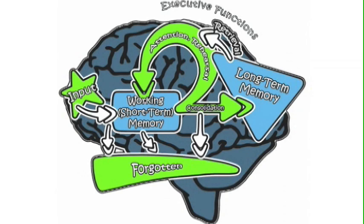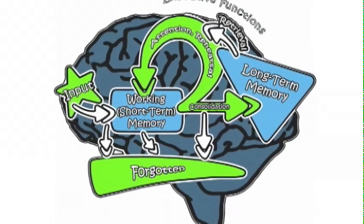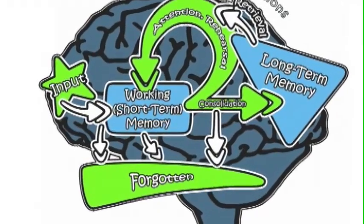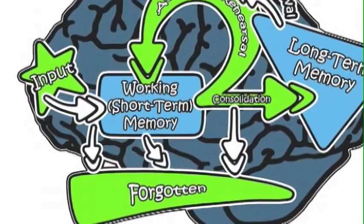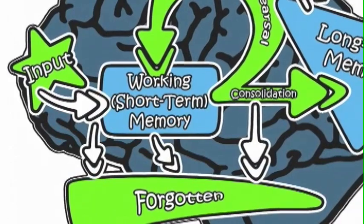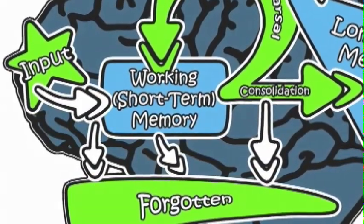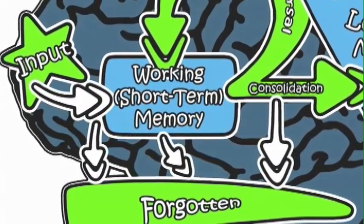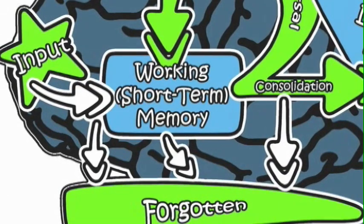New information that does enter the brain is available temporarily in working or short-term memory, where it may either be further processed into long-term memory or lost and forgotten. This is indicated by the second arrow leading to forgotten. Information is not stored in short-term memory for very long, as the name implies — perhaps only a few seconds or minutes. It's either processed or lost forever.